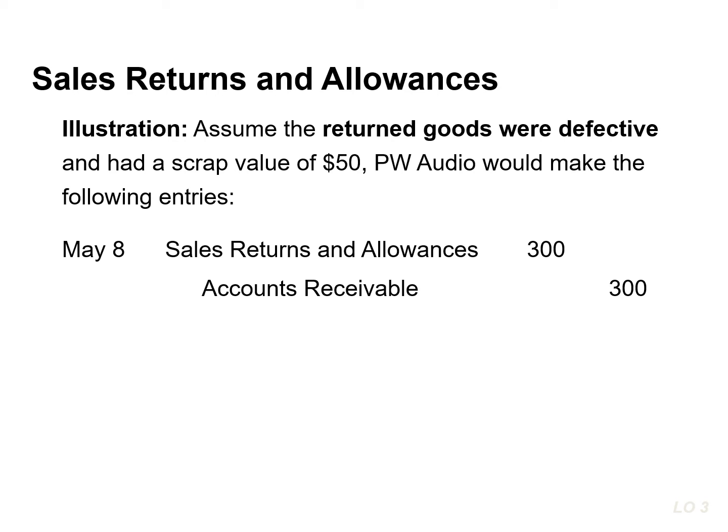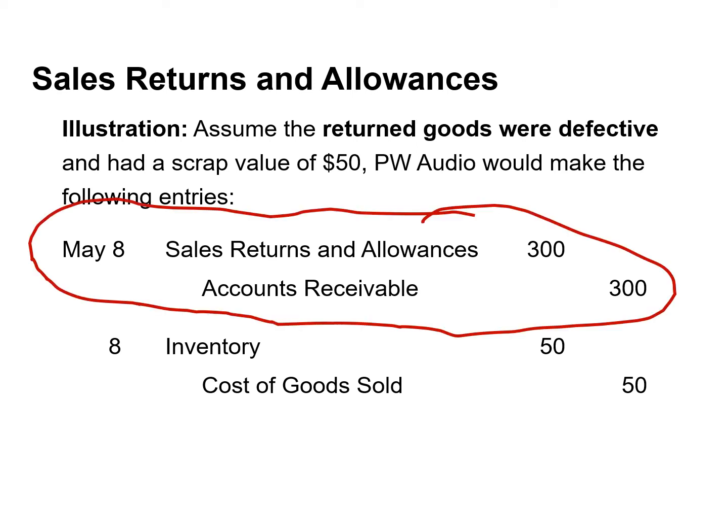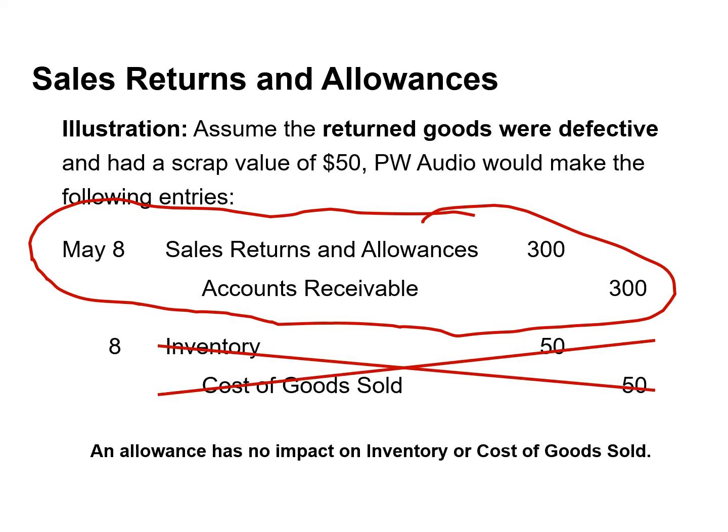If the goods were defective, PW Audio would make an entry to the inventory account to reflect the decline in value. If the inventory had a value of $50, then we would increase or debit inventory for $50, and decrease or credit cost of goods sold for the same amount. If the goods were not returned but instead the seller granted the buyer an allowance by reducing the purchase price, the seller would debit sales returns and allowances and credit accounts receivable for the amount of the allowance. An allowance has no impact on inventory or cost of goods sold.